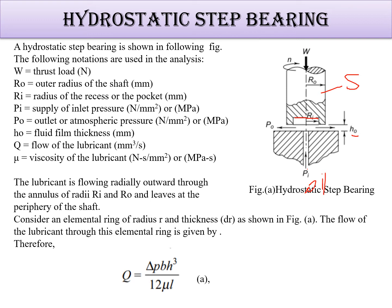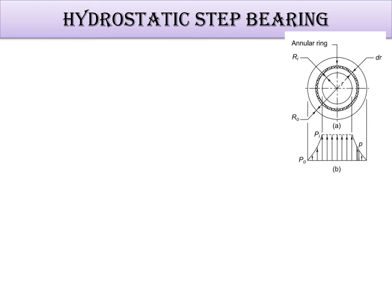Delta P b h³ by 12μ. This is the annular ring. This is small r, the elemental ring. This is the thickness dr. And Ri is the inner radius of the recess and Ro is the outer radius of the shaft. This is the pressure distribution. Here the pressure is continuously constant during the start and here the pressure drops like this.